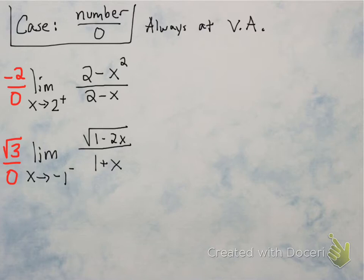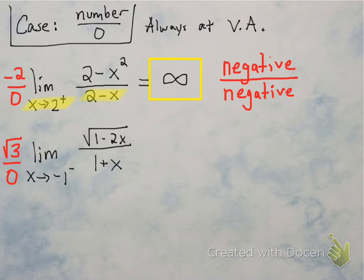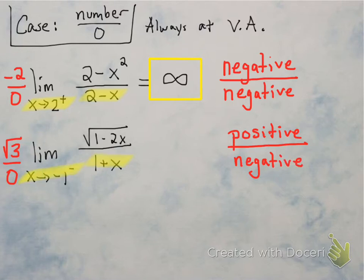To figure out which it's going to be, look at the sign of the top and bottom. In the first case, the top is going to be negative — we got negative 2. The bottom is also negative because x is approaching 2 from the right, and 2 minus a number bigger than 2 is negative. A negative divided by a negative is positive, so the limit is infinity. In the second case, the top is positive, but the bottom is negative because we're approaching negative 1 from the left — so the answer is negative infinity.